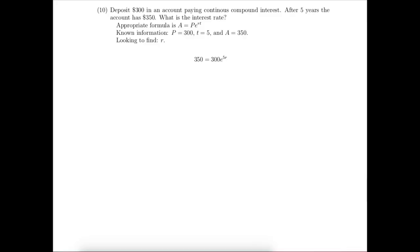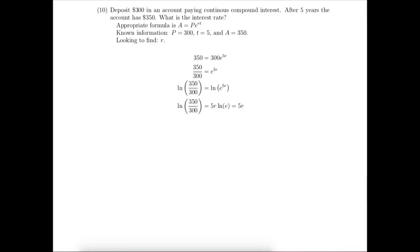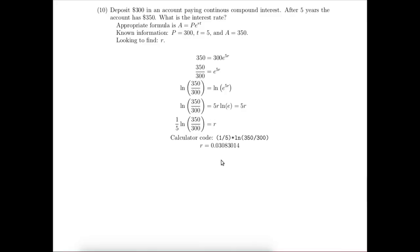Substitute the known information into the appropriate formula. We're trying to solve for R. The last thing being done on the right-hand side is multiplying by 300, so we'll divide both sides by 300. Now we need to get R out of the exponent, so we'll take the natural log of both sides using the algebra property of logarithms. That allows us to bring the 5R down to the baseline. You may remember that the natural log of E is just 1, so we'll solve for R by dividing both sides by 5. My calculator finds R to be 3.08%.